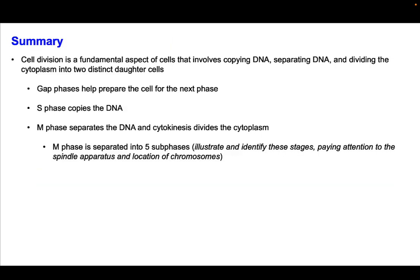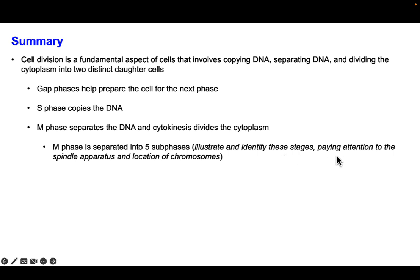To summarize: cell division is a fundamental aspect of cells that involves copying the DNA, separating the DNA, and dividing the cytoplasm into two distinct daughter cells. The gap phases help prepare the cells for the next phase. In S phase, the DNA is copied. In M phase, we separate the DNA, and cytokinesis divides the cytoplasm. M phase is separated into five sub-phases, and after practicing in class, you should be able to both illustrate and identify these stages — paying attention to the spindle apparatus and the location of the chromosomes.